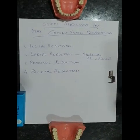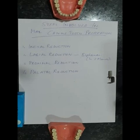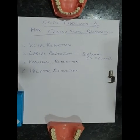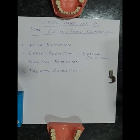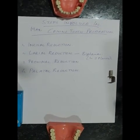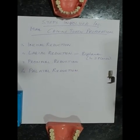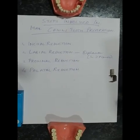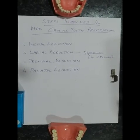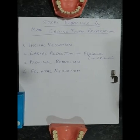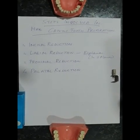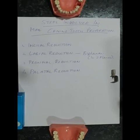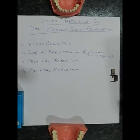Now I am going to tell you the various steps involved in preparation of a maxillary canine. The first step is incisal reduction, wherein we give depth orientation grooves on the incisal edge. In the case of a maxillary canine, the incisal edge has two slopes — mesial and distal. So we have to give our depth orientation grooves following both the mesial as well as the distal slopes. After giving the depth orientation grooves, we need to flatten the incisal edge, taking care that our bur is not reducing more tooth structure than indicated by the depth orientation grooves.